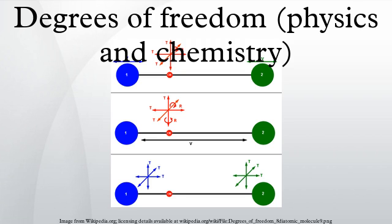In physics, a degree of freedom is an independent physical parameter in the formal description of the state of a physical system. The set of all dimensions of a system is known as a phase space, and degrees of freedom are sometimes referred to as its dimensions.